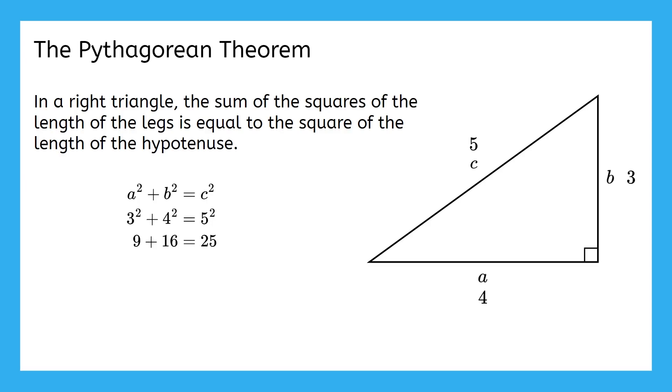The sides of most triangles don't come out this nicely, but if they do, we call those numbers a Pythagorean triple. Some other examples would be 6, 8, 10, or 8, 15, 17. And we'll see another one on the next slide.